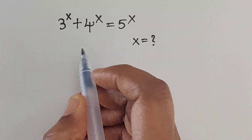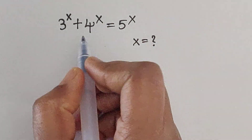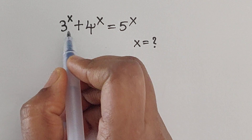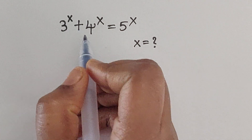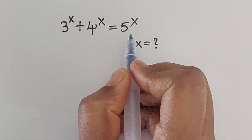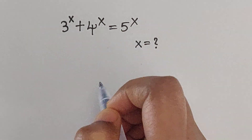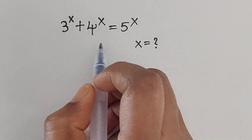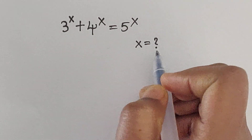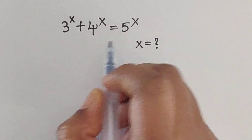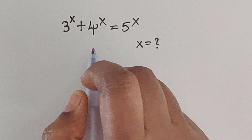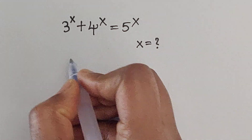Hello everyone, welcome back to our channel. Here we have one problem: 3 to the power of x plus 4 to the power of x equal 5 to the power of x. In this problem we have to find the value of x. So how do we solve this problem? Let's see.